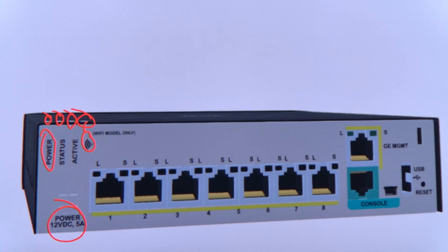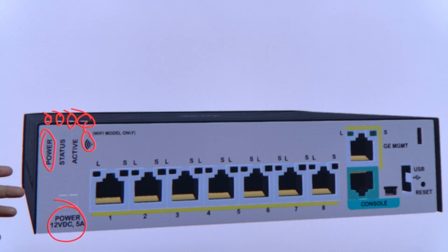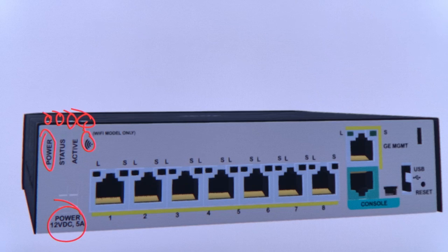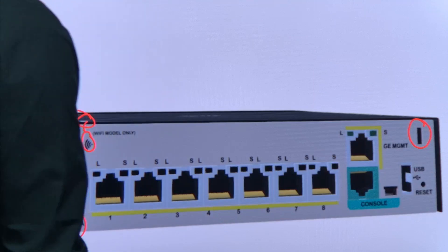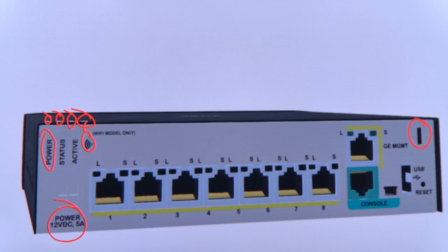This is a lightweight firewall designed for small business use cases — small offices, small branches, or environments with around 5 to 20 users. For power, you need to supply 12VDC at 5 amperes, similar to a small appliance power supply. You connect a power adapter to get connectivity from this firewall.